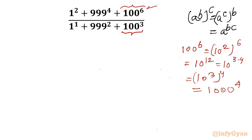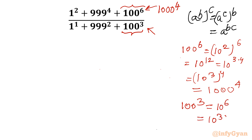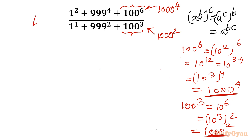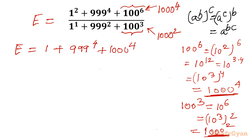So I will replace this part with 1000^4. Now for the denominator, 100^3 = 10^6 = (10^3)^2 = 1000^2. With these two substitutions, we call the given expression e. It becomes: e = (1 + 999^4 + 1000^4) / (1 + 999^2 + 1000^2).